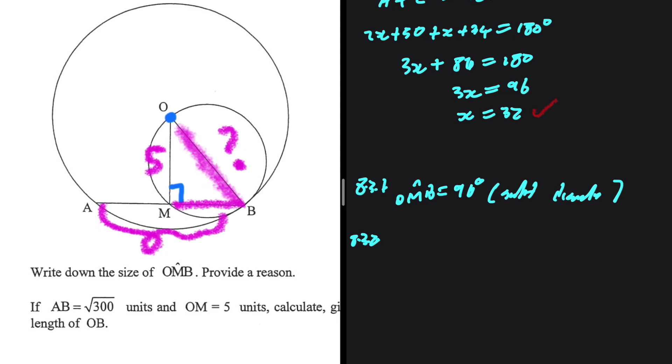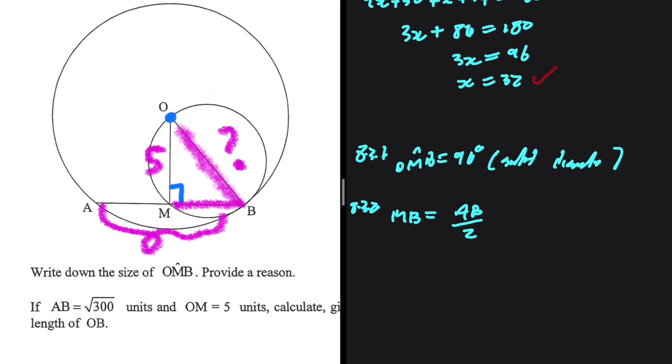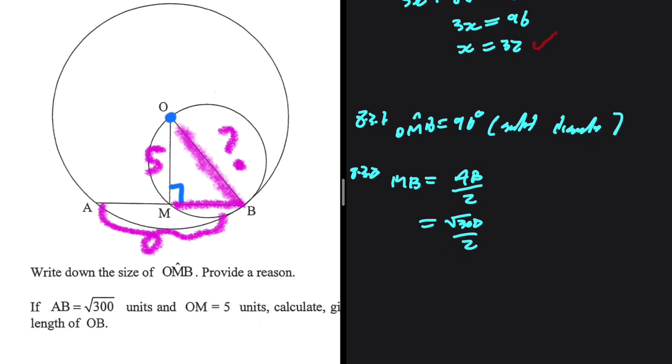If we have the length of MB, then we can find OB using theorem of Pythagoras. Let me show you how we can find the length of MB. MB equals AB divided by 2. That is because if OMB is indeed 90, then that means OM bisects AB—theorem 1.